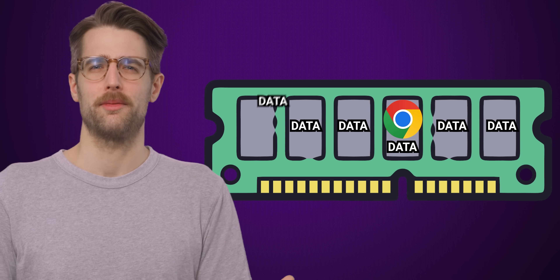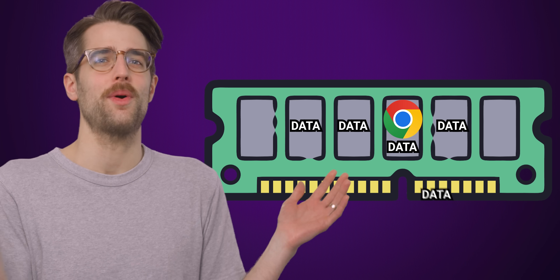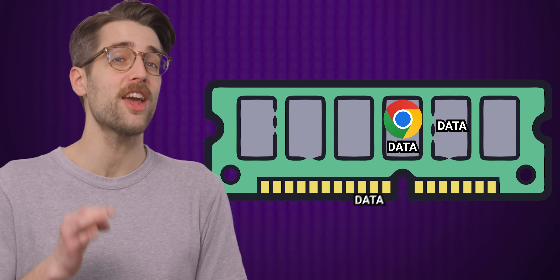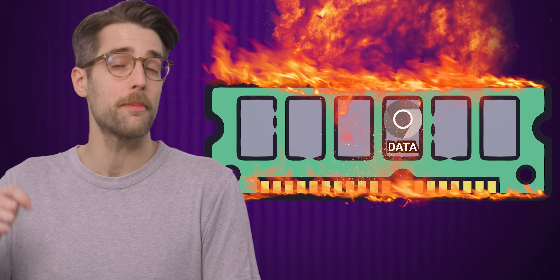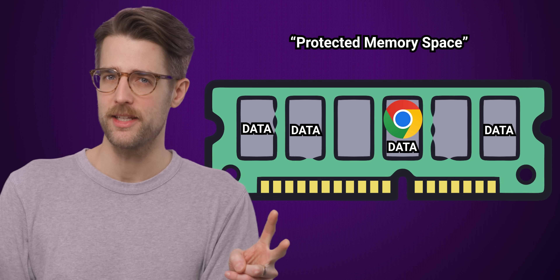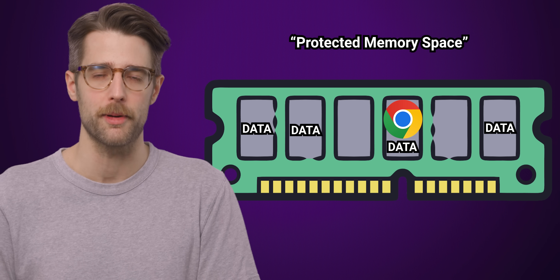Another key function of the kernel is to provide security and stability. Allowing programs to talk to the hardware in any way they wanted could allow them to access data they aren't supposed to, which could lead to a system crash or data theft from a malicious process. But because programs have to interface with the system through the kernel, the kernel can prevent these sorts of shenanigans. If you've ever heard the term protected memory space, this is part of what we're talking about.